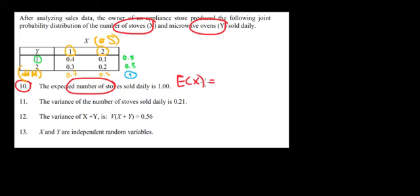Now, the expected number of stoves sold, the expected value of X, is going to be the sum of the probability times the sale. Let me write it mathematically to see how it looks. It's the probability times the value that we expect to sell.